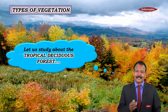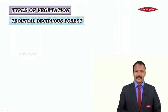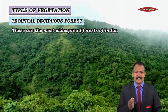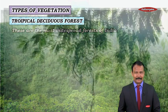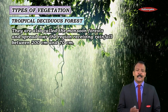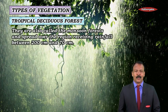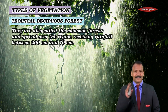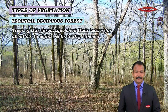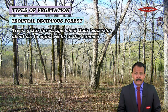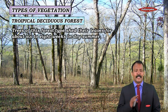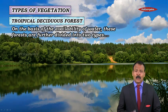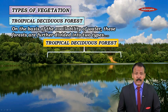Now let us study about tropical deciduous forests. These are the most widespread forests of India. They are also called the monsoon forests and spread over regions receiving rainfall between 70 and 200 centimetres. Trees of this forest type shed their leaves for about 6 to 8 weeks in dry summer. On the basis of availability of water, these forests are further divided into two types: moist deciduous forest and dry deciduous forest.